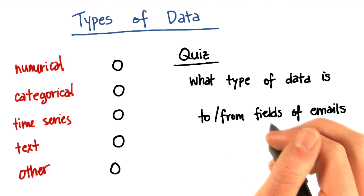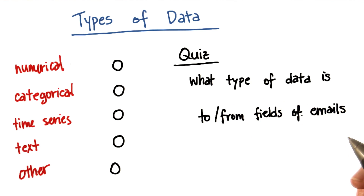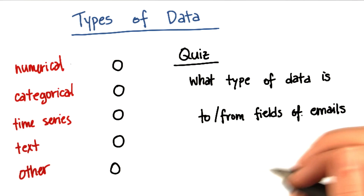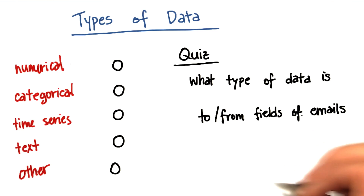And the last one is the to and from fields of the emails. So if I send a list to five different people, it would be those five email addresses. That could be a very interesting feature for persons of interest. Maybe they send lots of emails to other persons of interest, and that's one way we could figure out who they are. What type of data would that be?